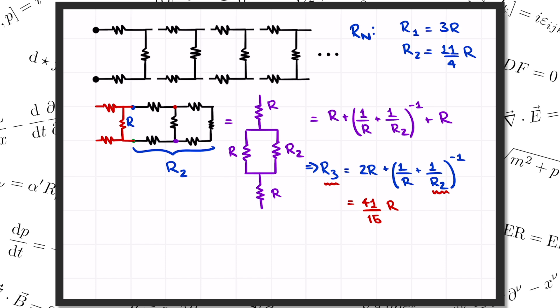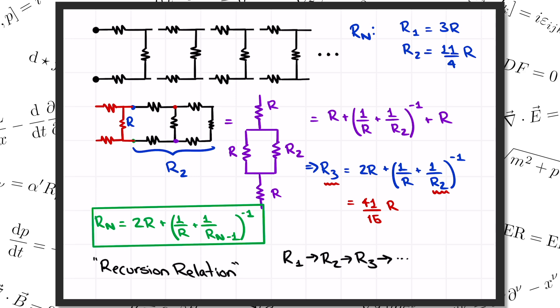But we don't actually care too much about those particular fractions. The thing we wanted to notice here is this recursive pattern that lets us write the resistance of the ladder with n blocks in terms of the resistance for the ladder with n-1 blocks. So with the same reasoning, we conclude that R sub n equals 2R plus 1 over R plus 1 over R sub n-1, all that inverse. This is called a recursion relation, and it tells us how to get Rn from Rn-1. And since we know the resistance of a single block, R sub 1, we can use this recursion relation to go from R1 to R2, R2 to R3, R3 to R4, and so on, all the way up to Rn.